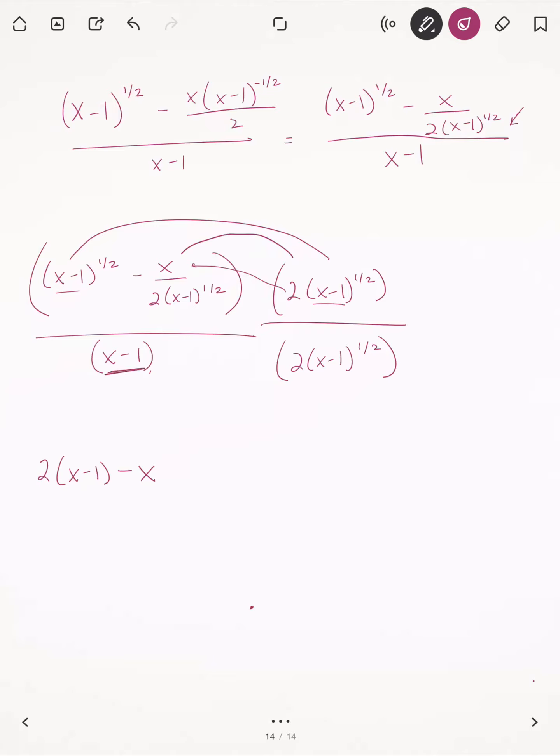And again here, I have 2, but I have x minus 1 times x minus 1 to the 1 half. Same base there, so it's like saying x to the first power times x to the 1 half power, which is really x to the 3 halves power. So we can take x minus 1 to the power of 3 halves there.